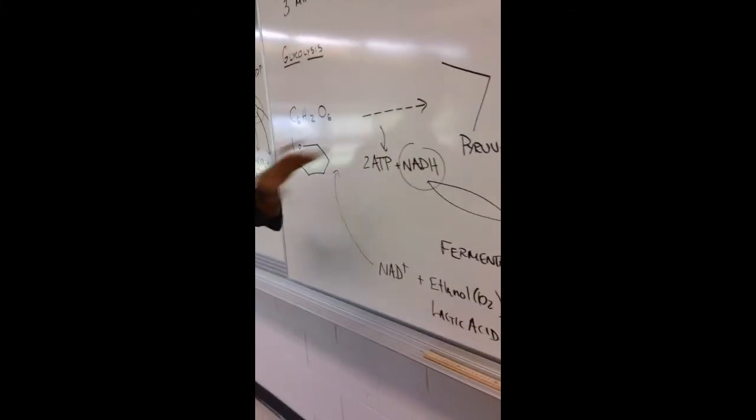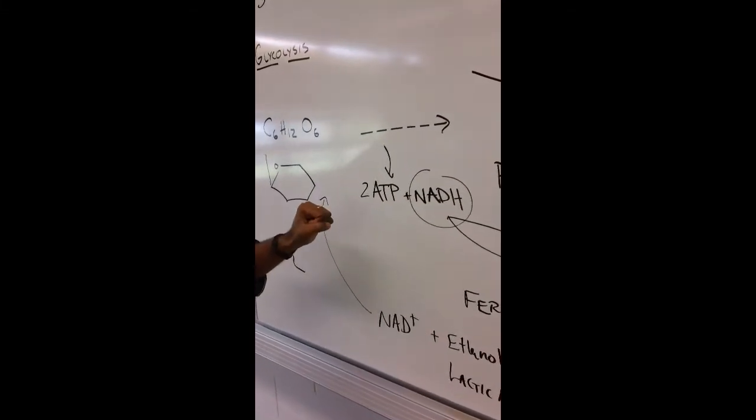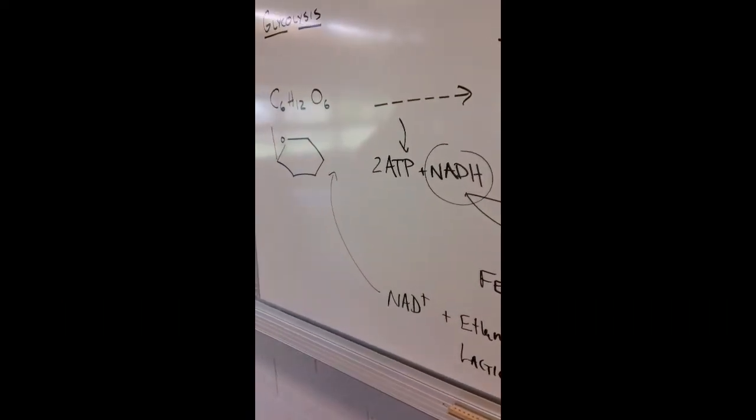With just glycolysis, you are not nearly as efficient, only generating 2 ATP per glucose molecule.